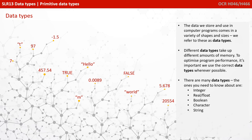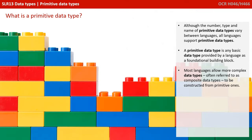There are many different data types. The ones you need to know about for the exam are integer, real or float, boolean, character, and string. Although the number, type, and name of primitive data types vary between languages, all languages support primitive data types.